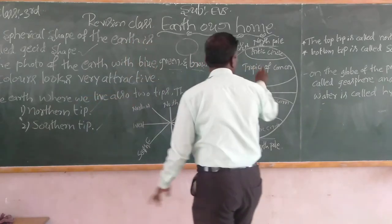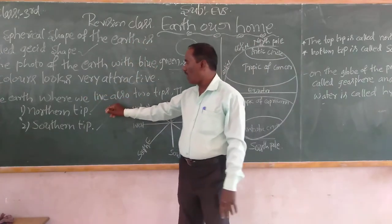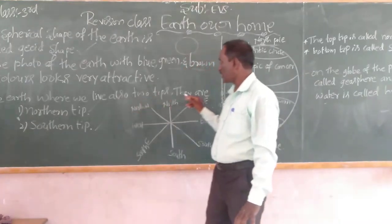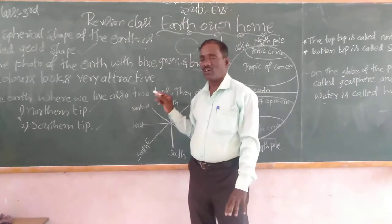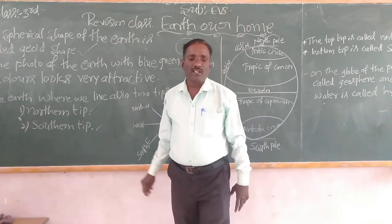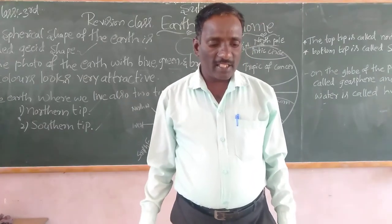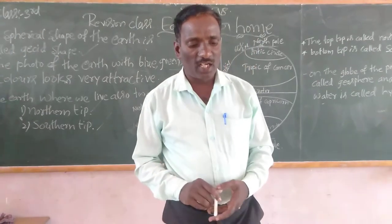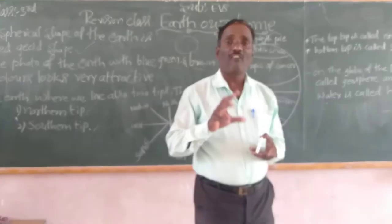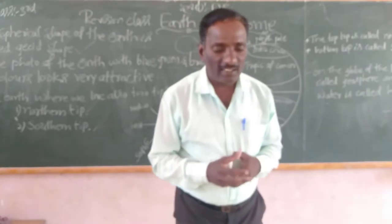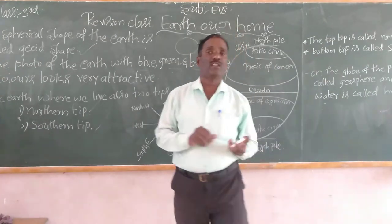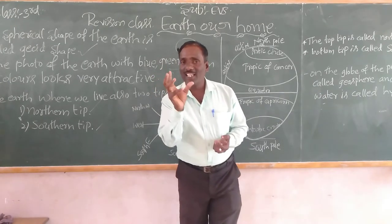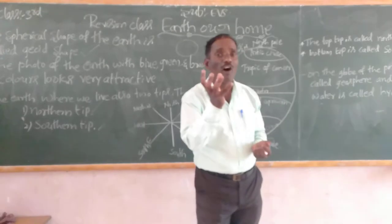The earth where we live also has two tips. They are called the northern tip and the southern tip. As in the case of an orange, the north and south tips of the earth are mostly flat. The earth has its own specific shape.